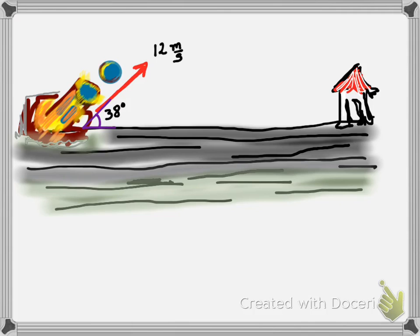In this drawing we see a cannonball that is being fired at a 38 degree angle above the horizontal. The speed or velocity that is being described is 12 meters per second. So the question is, what is the horizontal component of this velocity, of the velocity of the ball?